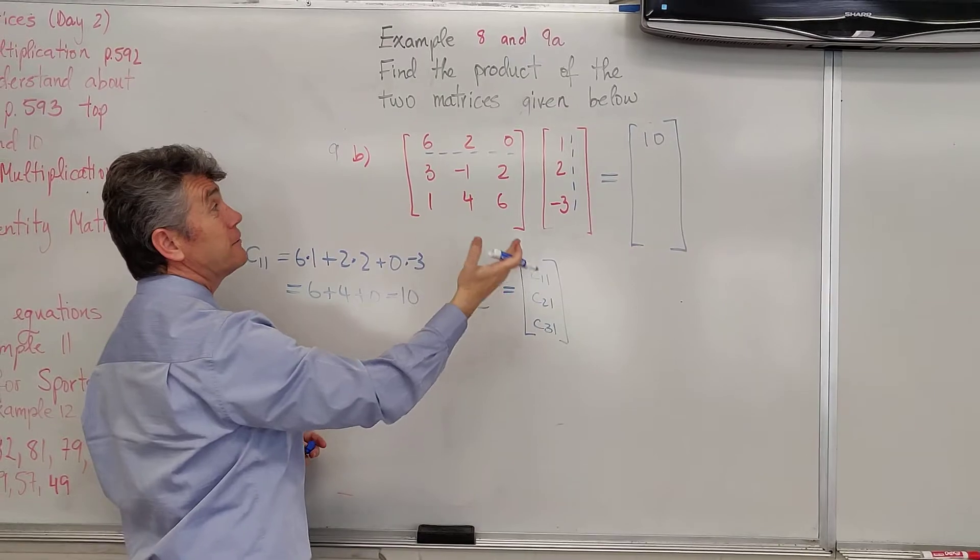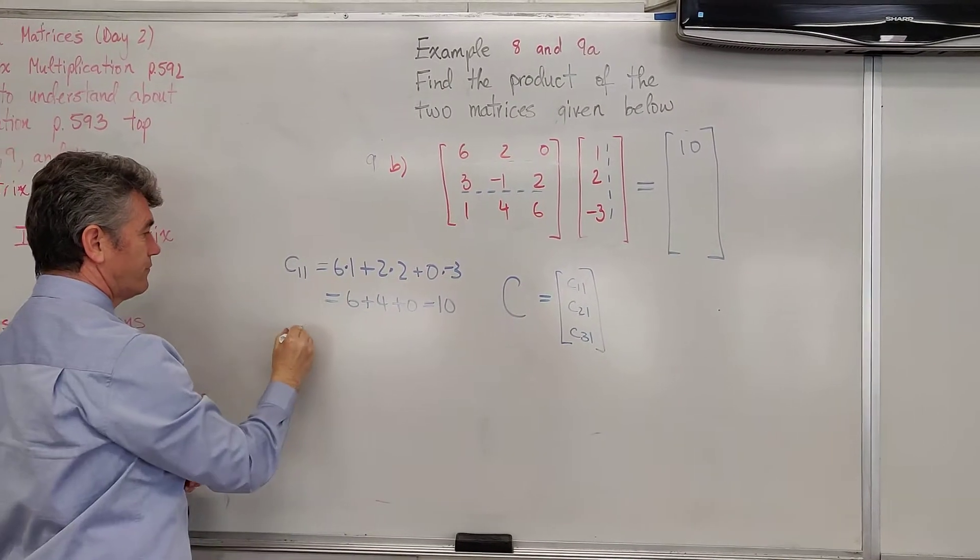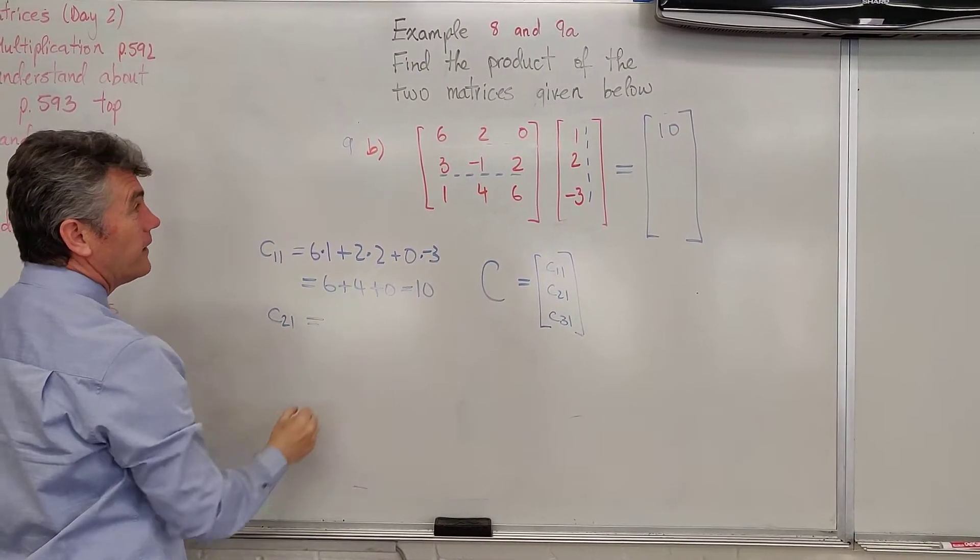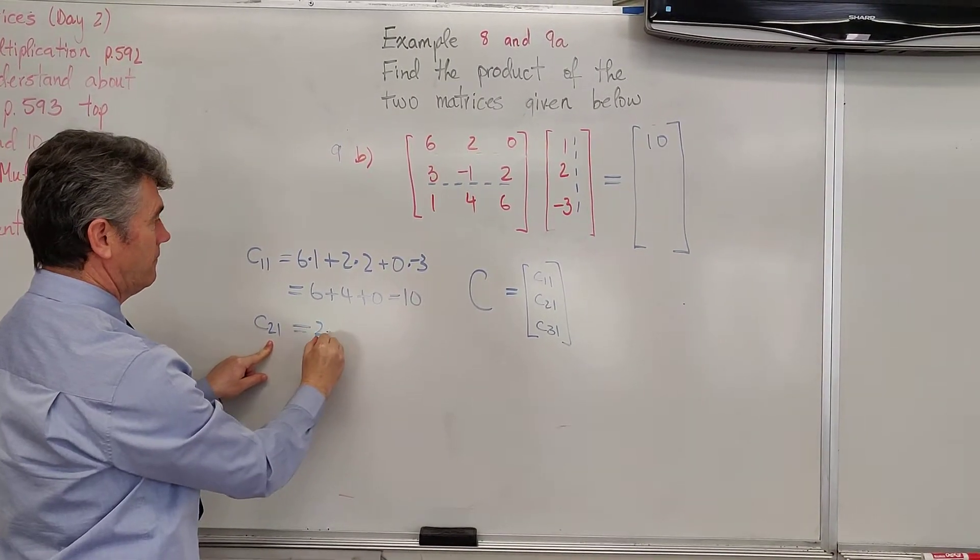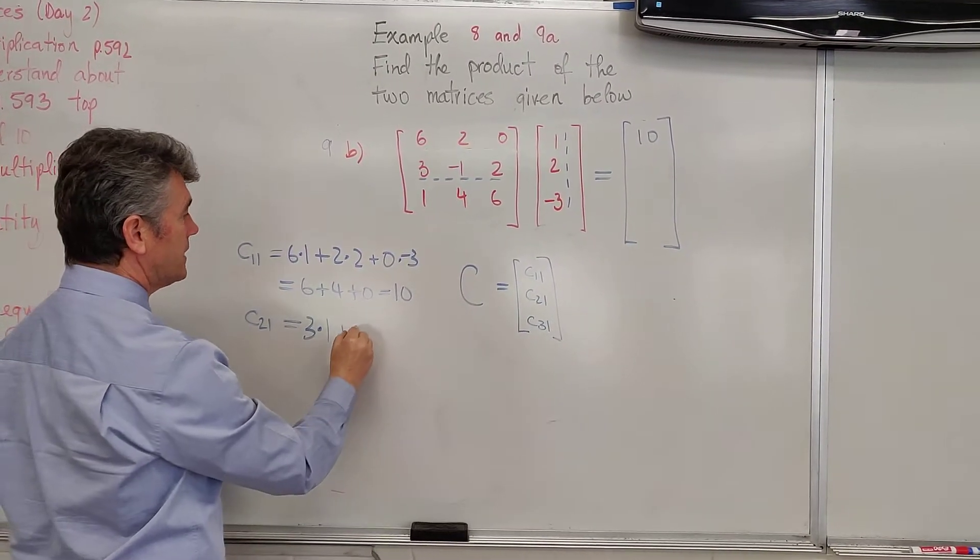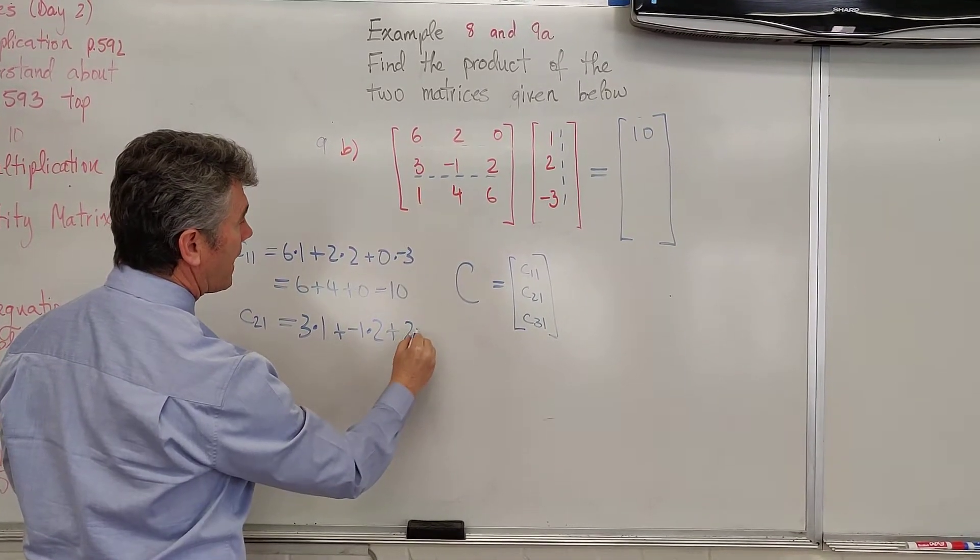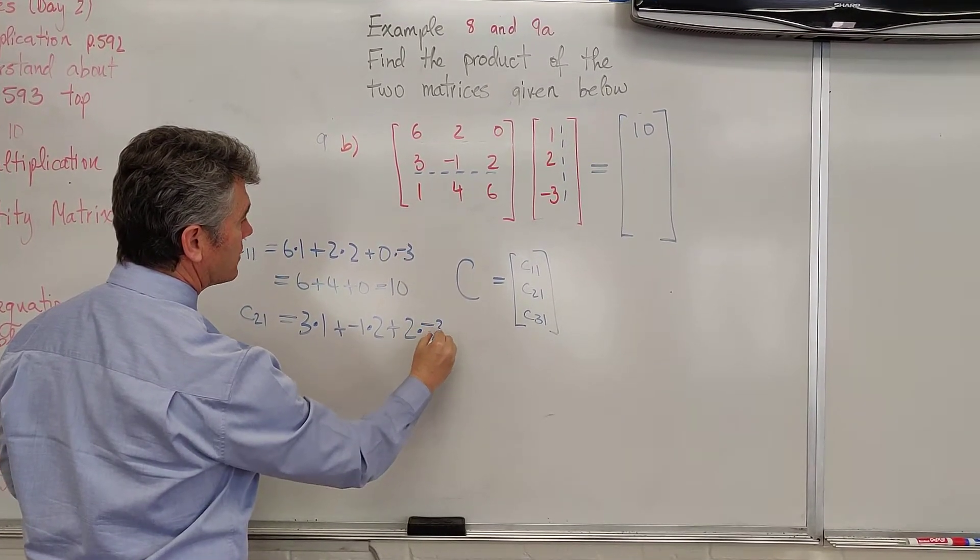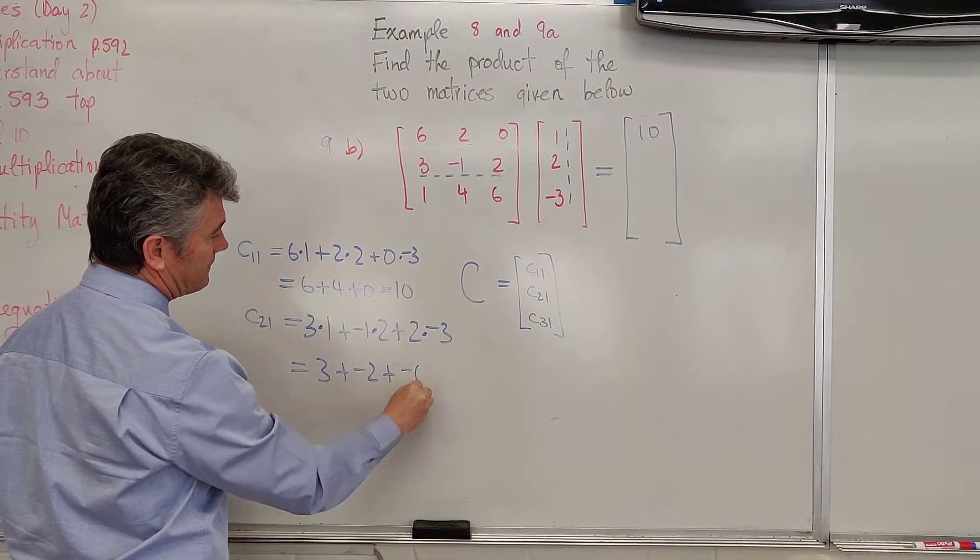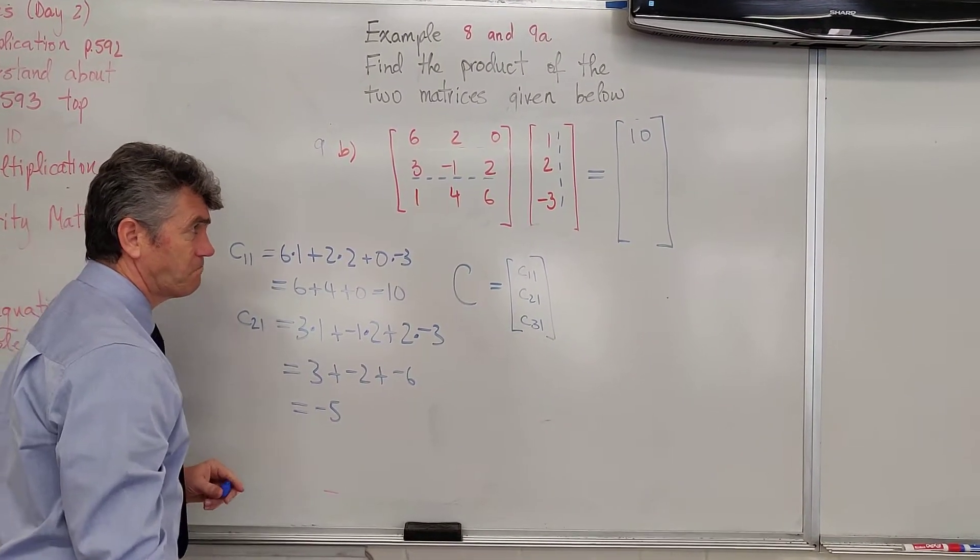And then, using the first row, we move on to the second row. Same idea. We're going to use the second row and the first column. And so, first times first. Plus the product of the middle entries. Negative one times two. And now, the product of the last entries. Two times negative three. Three plus negative two plus negative six. Negative five.